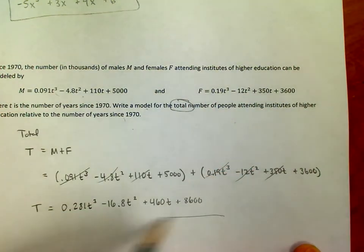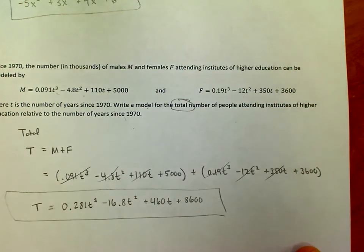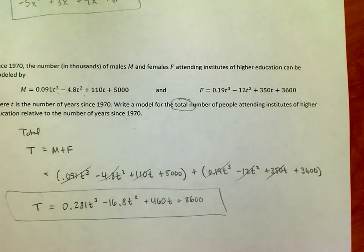So the total would be given by this polynomial. So there we go, we're not asked to do anything with it, we're not asked to find the total number of students in 2010 or anything like that. It's simply saying find the new equation for total students. So we're done, that's it for the problem. Hopefully that makes sense.